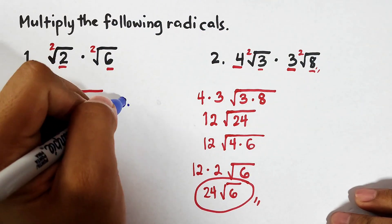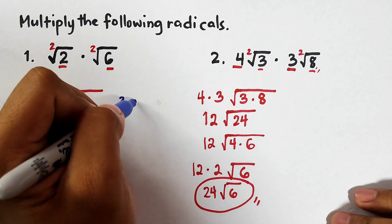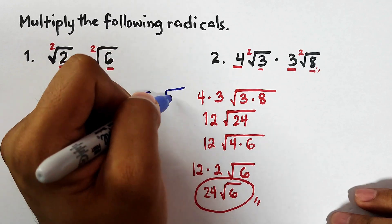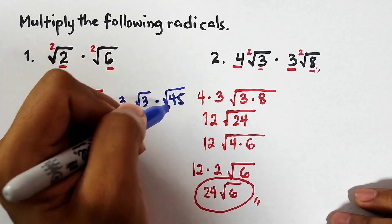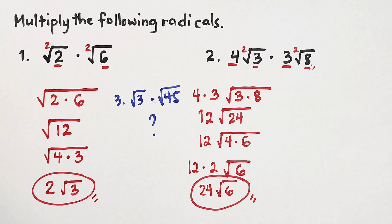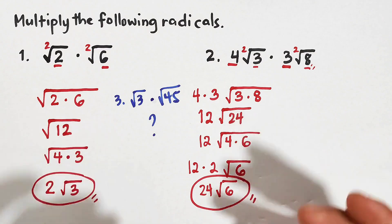Now as part of our routine, I will give you the third example. I want you to multiply the square root of 3 and the square root of 45. What is your answer in this problem?